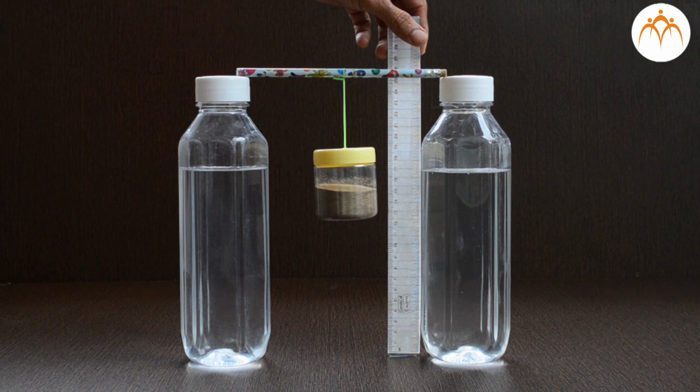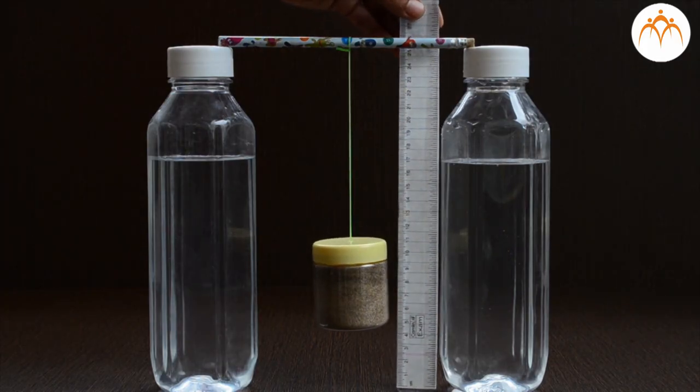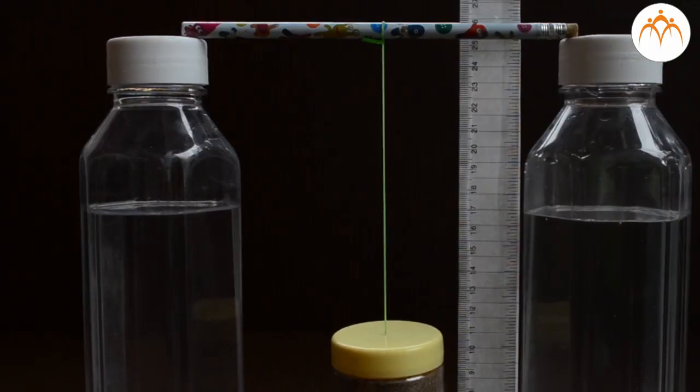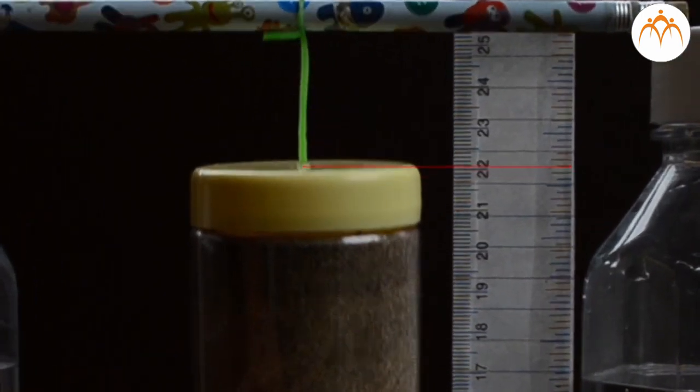What if we add more sand to the container? It will be stretched more. If we push the container by hand upward, length of the rubber band decreases. At one point it becomes loose.